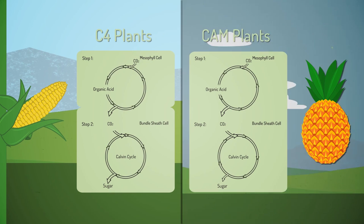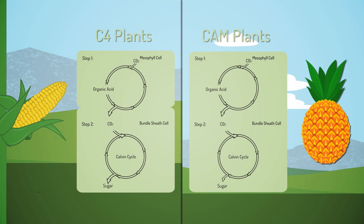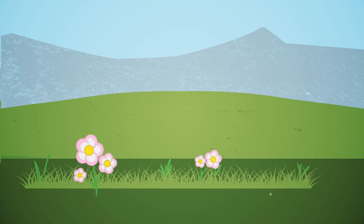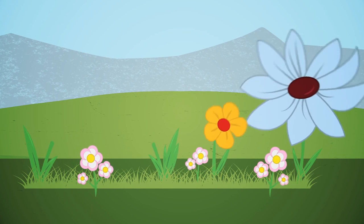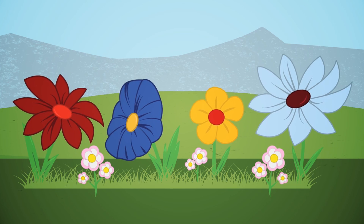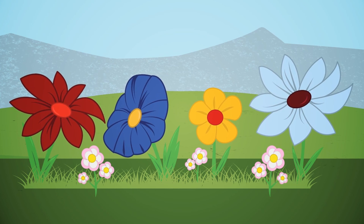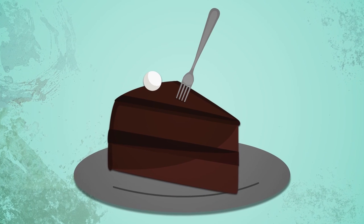Carbon fixation, along with the other steps of the cycle, enable plants to make essential carbohydrates. If the light-independent reactions did not occur, we would not be marveling at the beautiful colors of flowers or enjoying delicious chocolate cake.